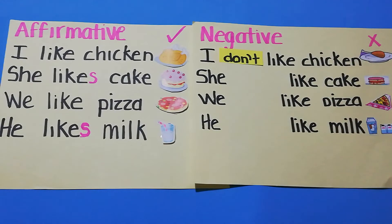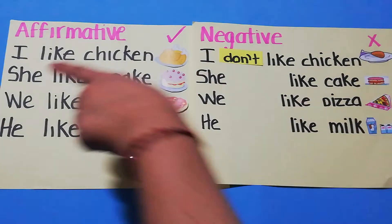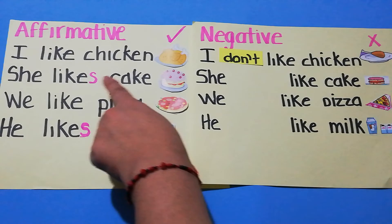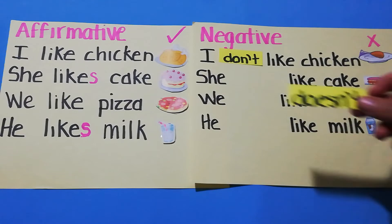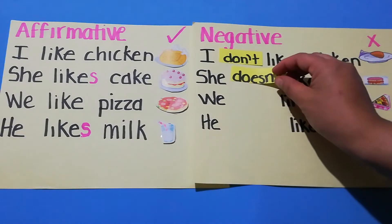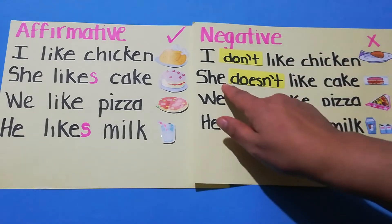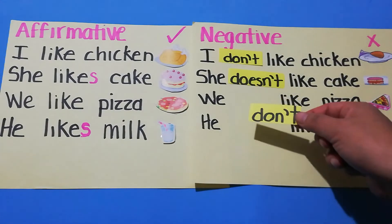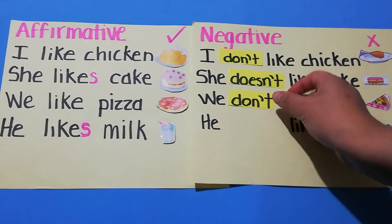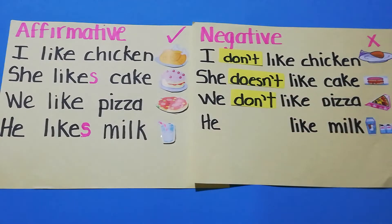Affirmative sentence: She likes cake. You put doesn't before like: She doesn't like cake. We like pizza — put don't before the verb: We don't like pizza.